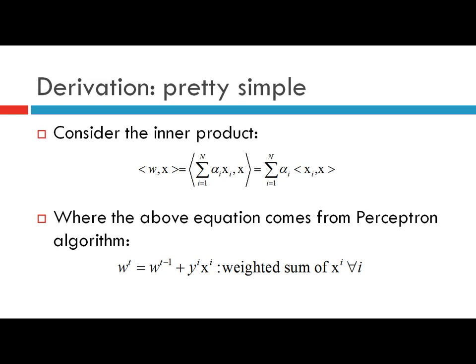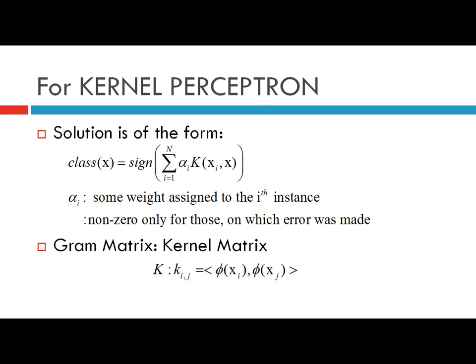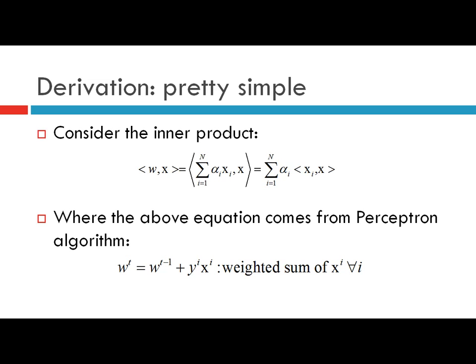The derivation of the learning rule — the sign function of sum over i from 1 to N of alpha_i times K(xi, x) — can be easily derived. Consider the inner product of the weight vector w and the instance x for which the decision is to be made. w·x is given as the inner product of the sum over i from 1 to N of alpha_i times xi, and x, which equals the sum over i from 1 to N of alpha_i times the inner product of xi and x.